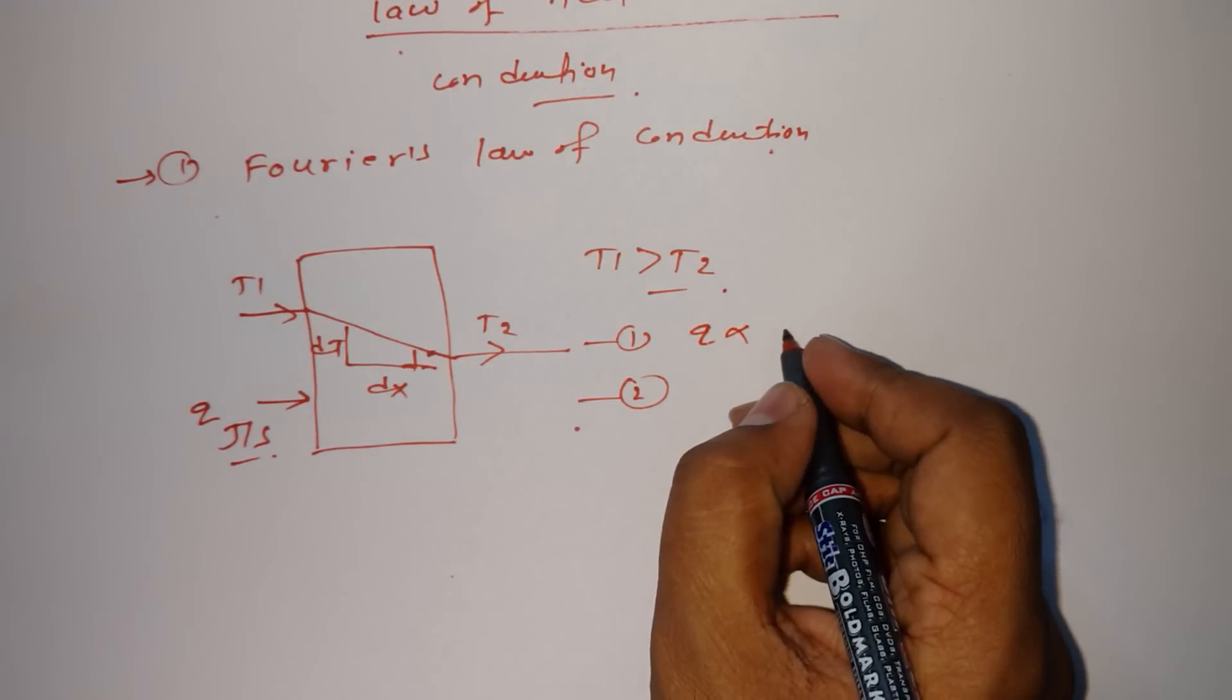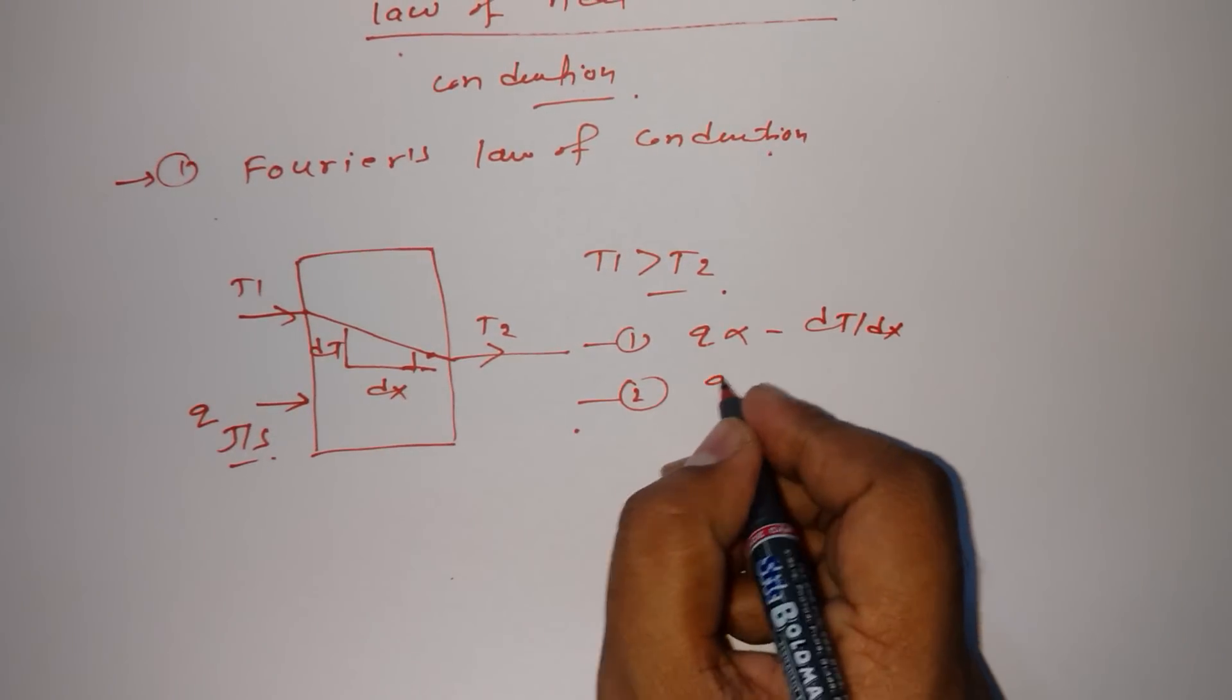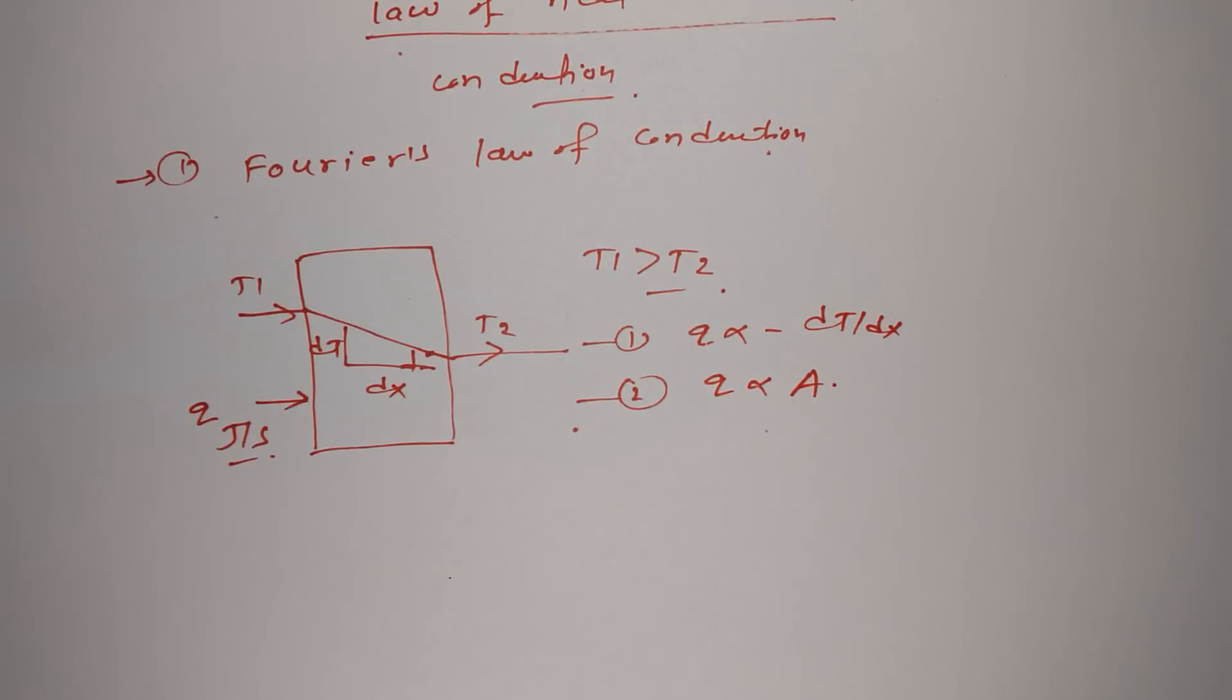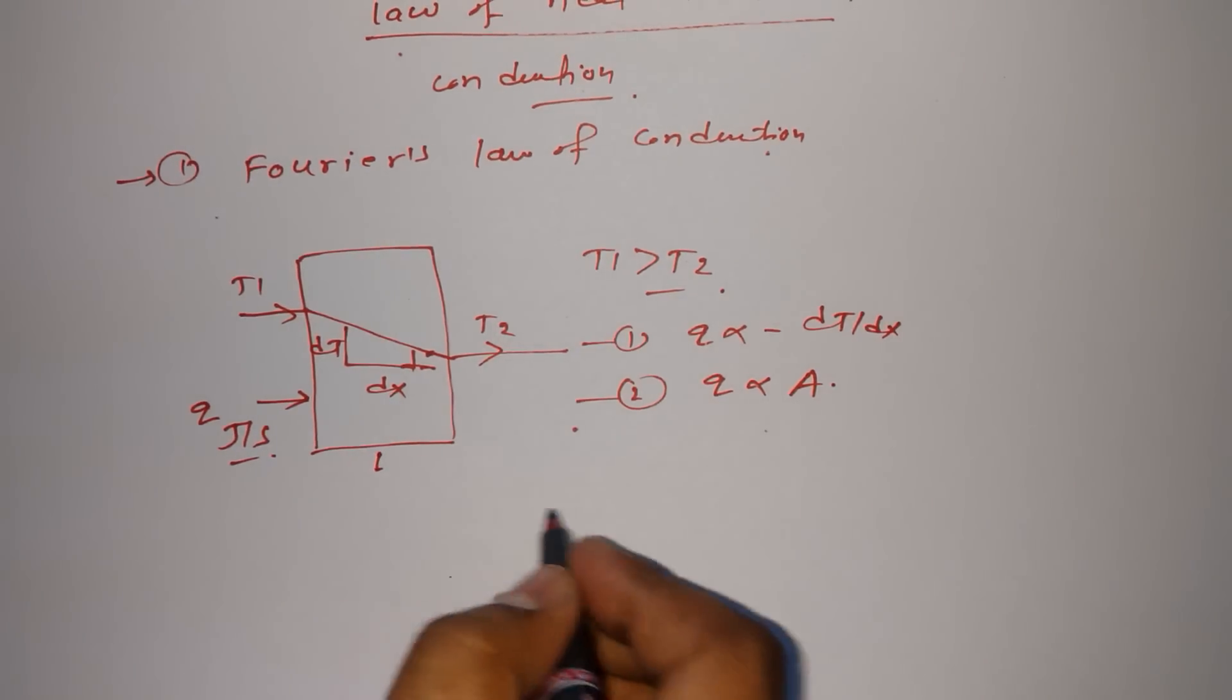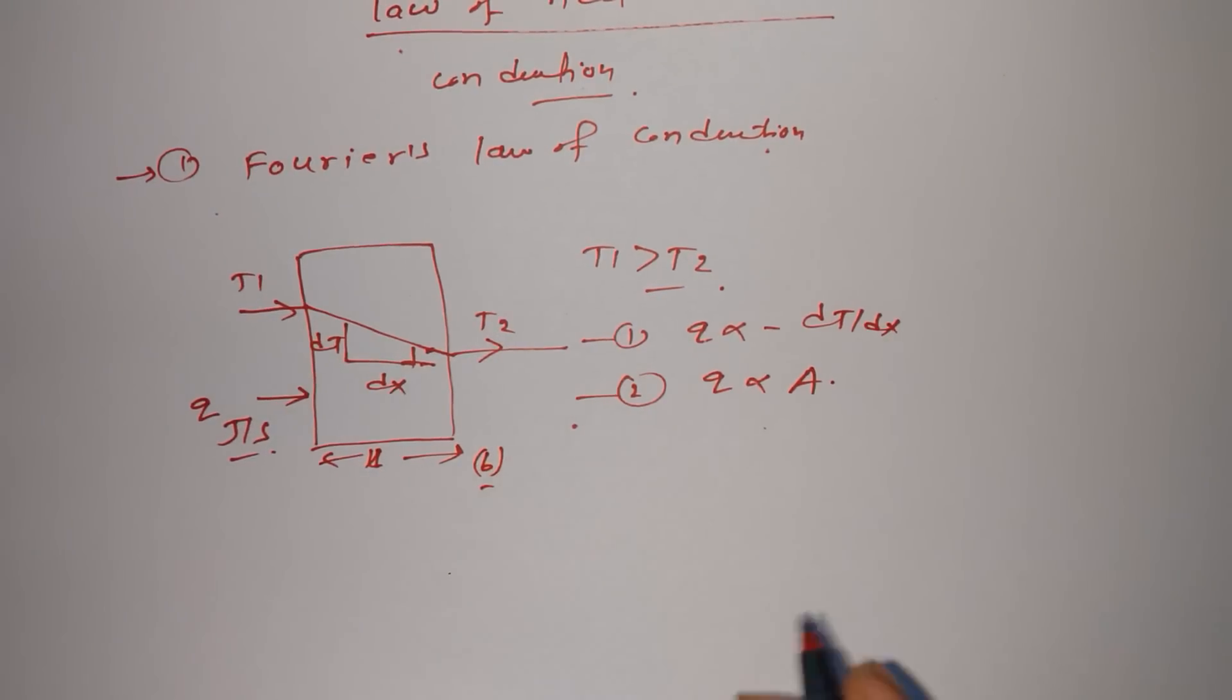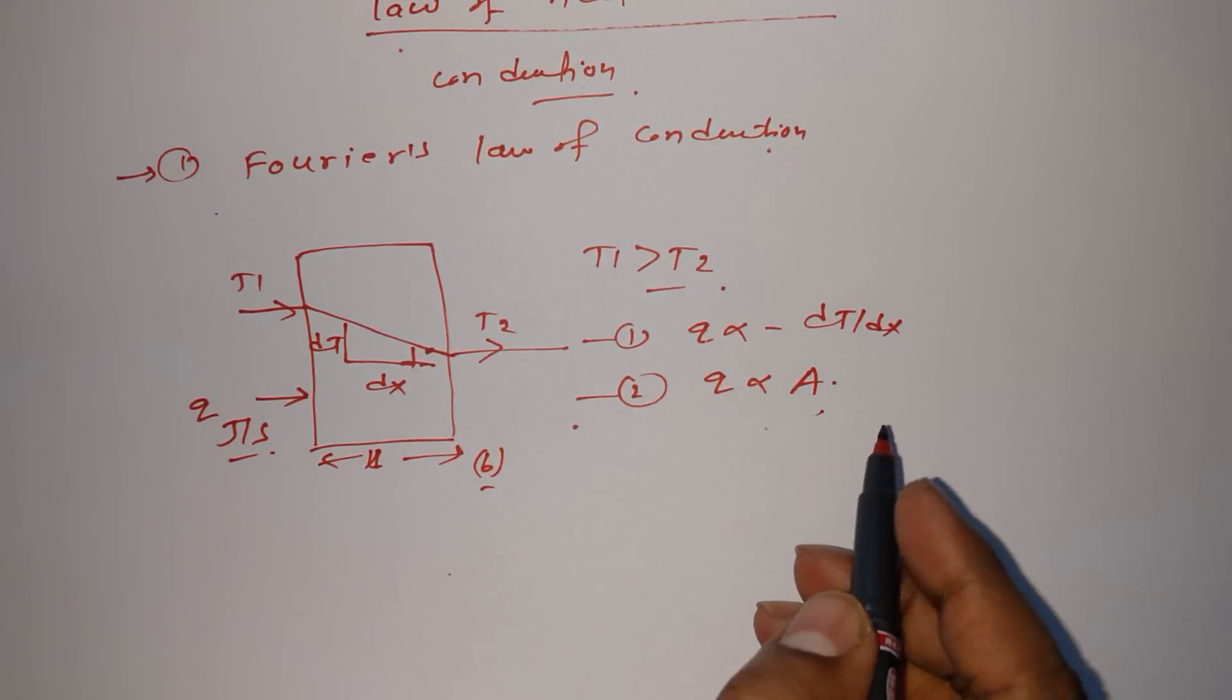Q is directly proportional to minus dT upon dx, as well as Q is directly proportional to A, the area of this wall. This wall has length and breadth, so length L times breadth B equals area.